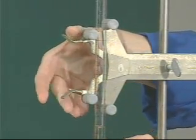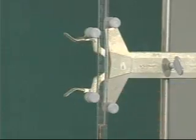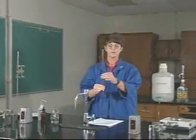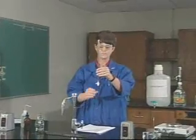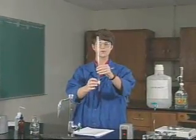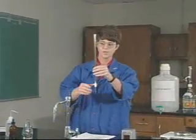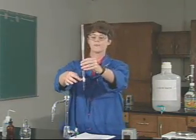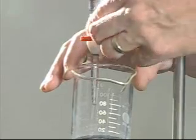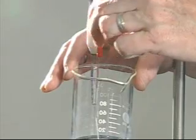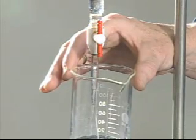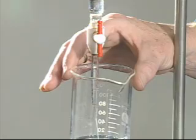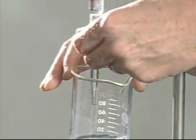I need to talk a little bit about the burette before you begin to use it today. This part is the body of the burette, and this part down here is called a stopcock. This stopcock has a handle on it that can be turned, and if I turn the handle, liquid will flow out. If I turn the handle back so that it is perpendicular to the barrel, then that closes off the flow of liquid.